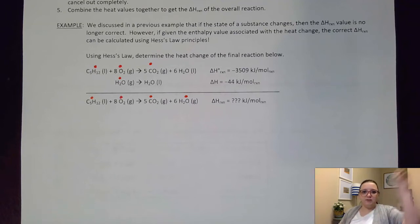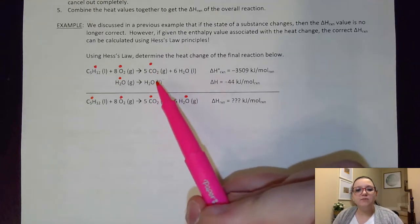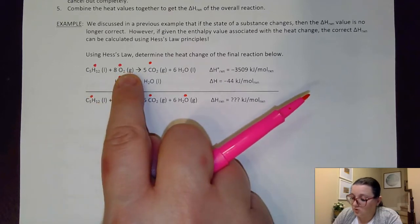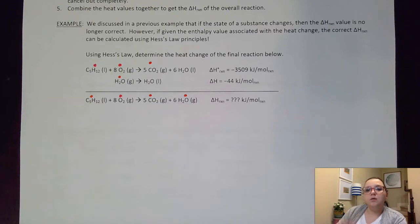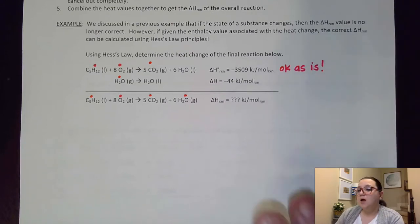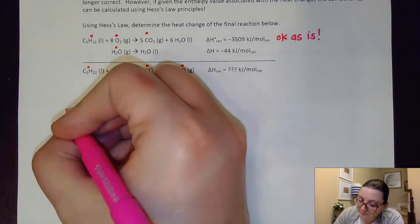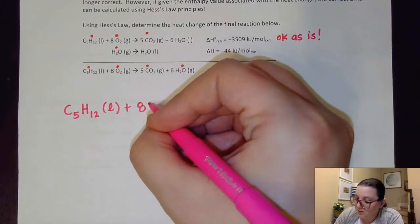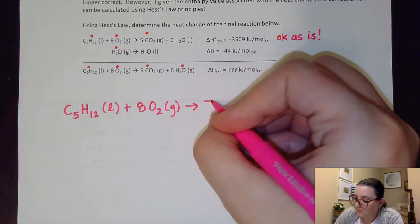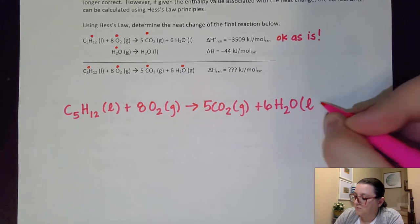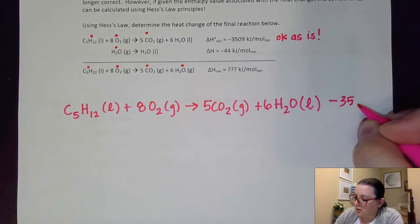Once I've matched up my substances, I want to see if I need to do any manipulations to these individual equations. For this first equation, the C5H12, the 8O2, and the 5CO2 are not only on the correct side but also have the correct coefficient. So this reaction is okay as is — I'm not going to have to do any manipulation to it. I'm going to go ahead and rewrite it down here so we can practice canceling things out. I'm copying it down as is, and since we didn't do any manipulations, that heat value is still going to be negative 3509.